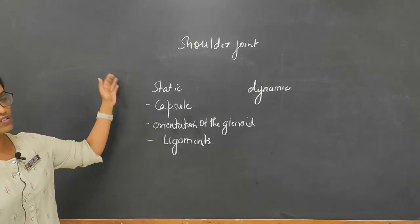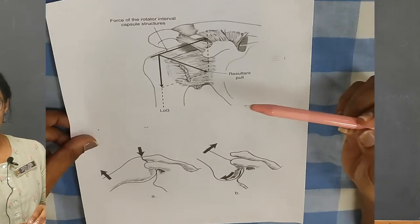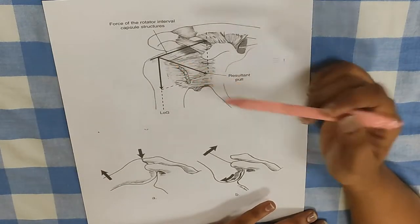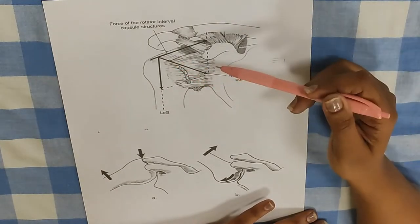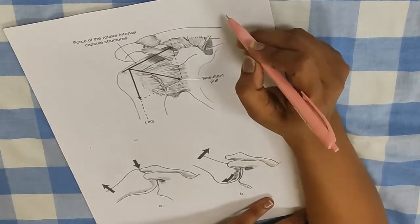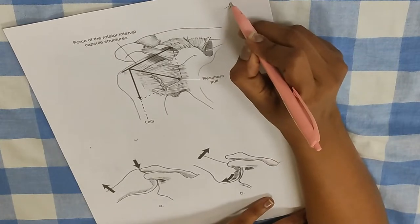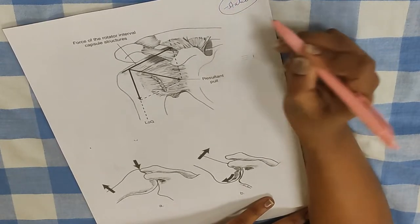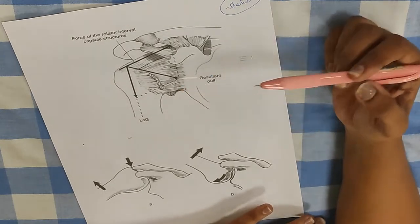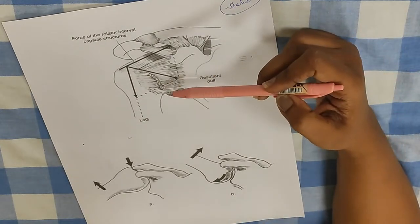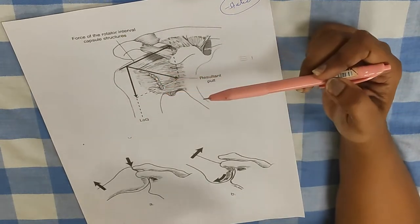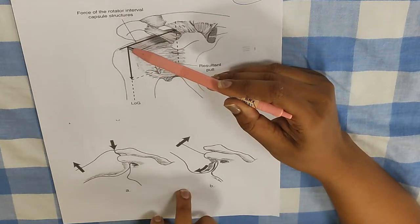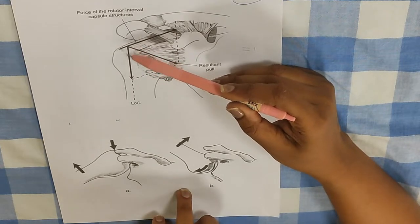We will now look in a little more detail at these static factors. Static factors are those which comprise inert capsuloligamentous structures that maintain stability at the shoulder.